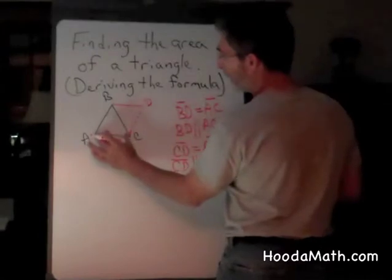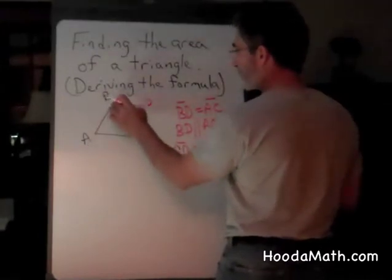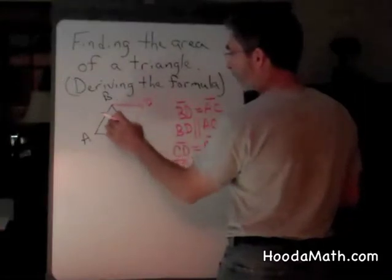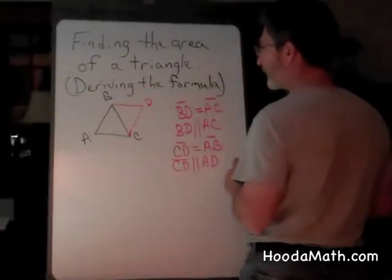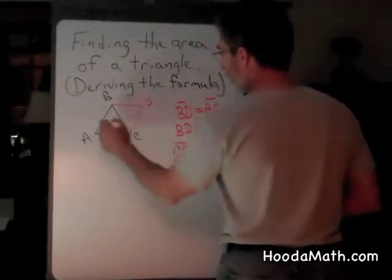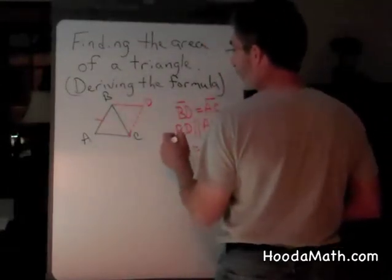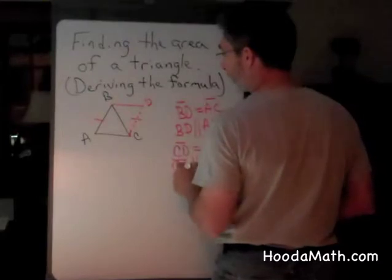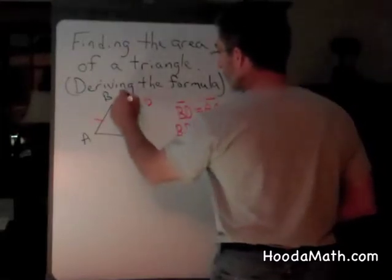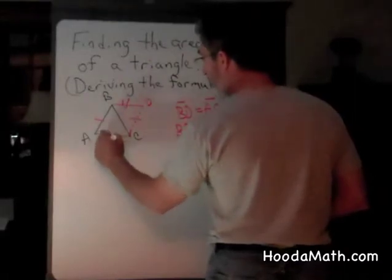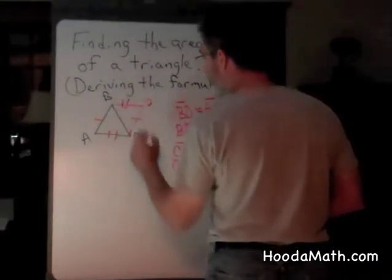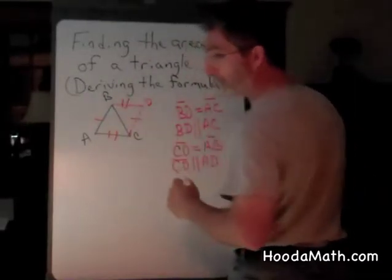What we've actually done is taken this triangle and flipped it over so that this triangle is identical to the size of this triangle. Because AB equals the same size as CD, and it's parallel to it, and BD is the same size as AC, we have made a parallelogram.